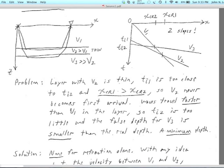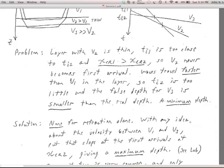So essentially, the TI1 is too close to TI2. And so the V3 can take over before we ever see V2. So basically, looking at our first arrivals, we have no way of measuring. We'd be very lucky to be able to see V2 in the data after the V3 arrival. So usually, we just don't have any way of measuring it. Now, the waves travel faster than V1 in the layer. So what happens is that the TI2 is too small for our assumption of having no V2, having no second velocity, just having V1 and V3, that's going to be what we think we observe. So our TI2 is going to be too small for that. And so we'll get a false depth for the V3 refractor, which we think is V2. And that depth is going to be smaller than the real depth.